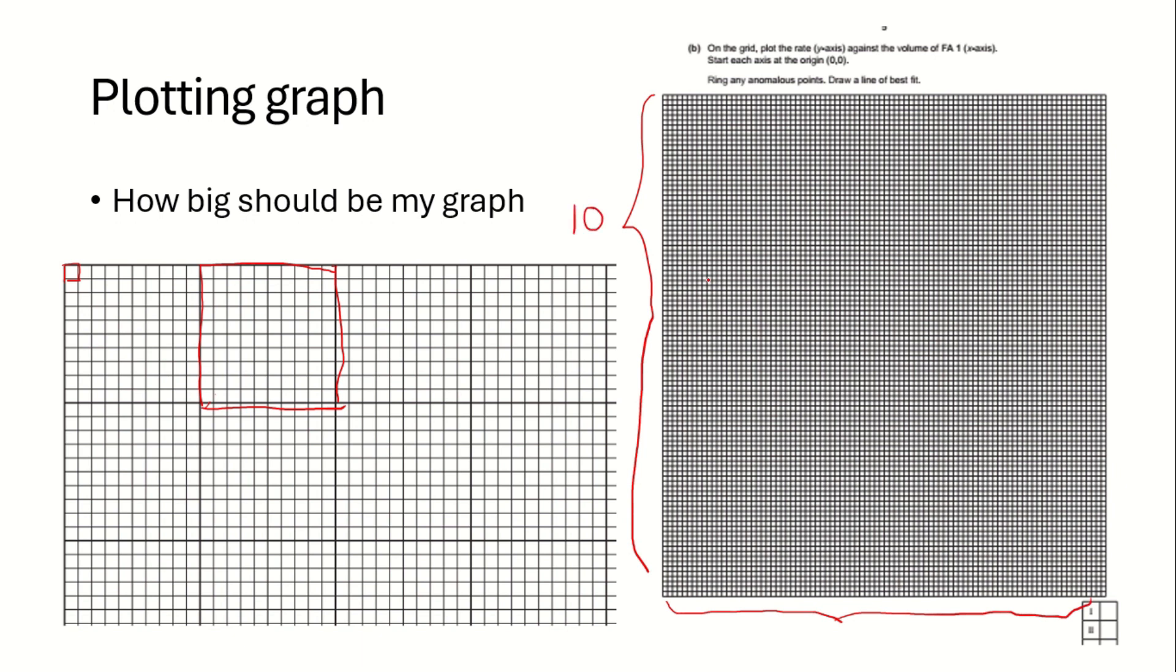there are 10 big squares on the y-axis and there are 8 big squares on the x. Your graph should occupy at least 5 big squares on the y and 4 big squares on the x, so at least half of the space given.